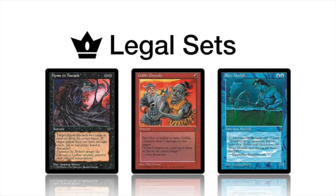Goblin Grenade single-handedly made goblins a thing in Eternal Central. I don't think it's overpowered because you do have to sacrifice a goblin and need one on the field, but it is definitely a very strong card. On the right you see River Merfolk — for two blue you get a 2/1 creature, and for one blue you can give it mountainwalk. It's not really powerful, but in Fallen Empires you have many merfolk like Sea Singer, making a mono blue merfolk deck or counter-burn build viable alongside Lord of Atlantis.